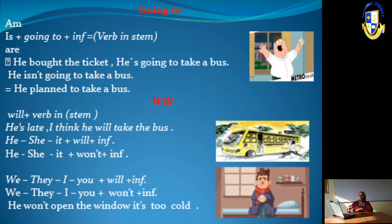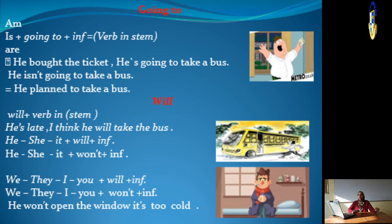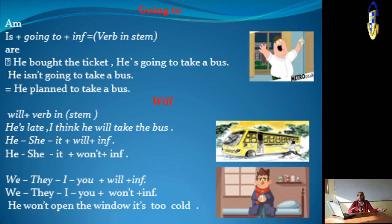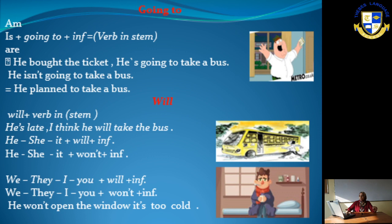Let's look at the formation of both 'will' and 'going to.' For 'going to': subject + am/is/are + going to + verb stem. For example: 'He bought the tickets, he is going to take a bus' — he planned it. For 'will': subject + will + verb stem.